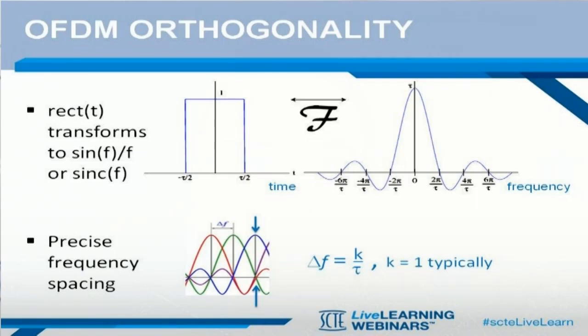If we line up the sinc functions just right, the zero points of other subcarriers line up at the peak of a given subcarrier, which is what makes them orthogonal and therefore non-interfering with each other.